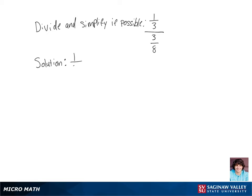Let's divide one-third by three-eighths. When we're dividing by fractions, that's the same as multiplying by the reciprocal. The reciprocal of three-eighths is eight-thirds, so we're going to multiply one-third by eight-thirds.